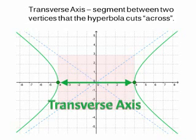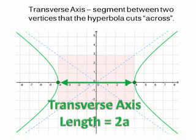The line segment that connects the two vertices has a special name called the transverse axis. It is an axis of symmetry. The word trans means across. We can remember that the transverse axis is the one the hyperbola cuts across. Since length a is the distance from the center to a vertex, this means that the transverse axis has length 2a.